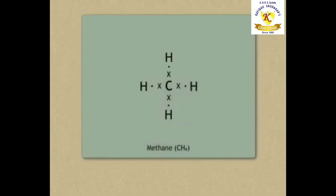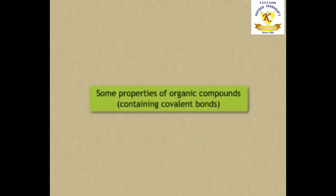The structure of methane is given here. In the structure you can observe carbon atom is centrally placed. If the electrons of carbon are shown by X and the electrons of hydrogen by a dot, then the structure of methane will look like this. The above structure is known as the electron dot and cross structure. Now let's see some properties of organic compounds containing covalent bonds.